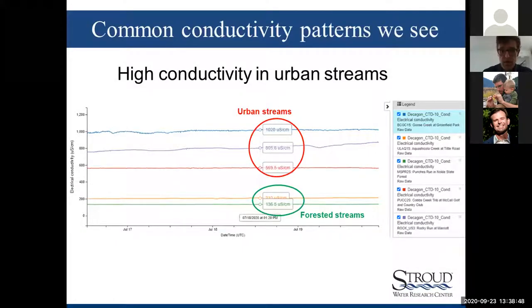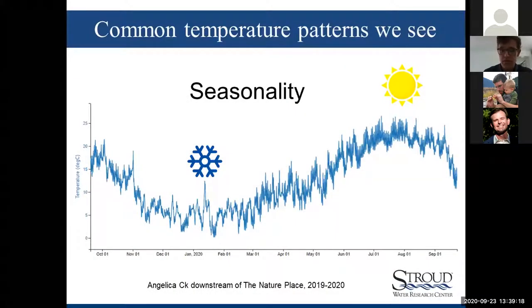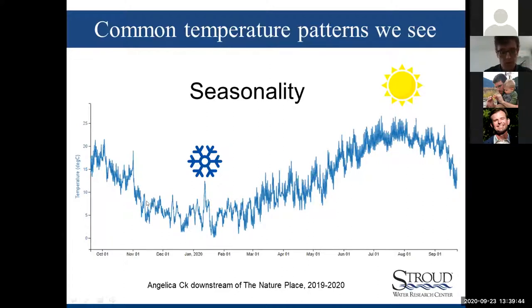Another common pattern with conductivity is urban streams. It's been shown across the country that urban streams generally have higher conductivity because of dissolved ions and pollutants — road salt being a major contributor. Comparing three urban to three forested sites, you can see a substantial difference in conductivity values. Moving to temperature, we certainly see seasonality — starting in the fall, continuing through winter at the lower range, then moving up through summer. With daily measurements you can see points of warming in winter or major peaks that you'd completely miss with weekly or monthly sampling.